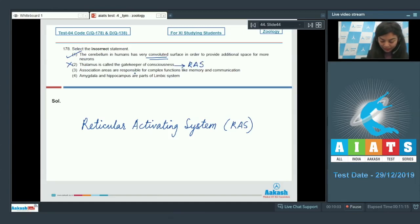Association areas are responsible for complex functions like memory and communication. This is correct. And amygdala and hippocampus are parts of limbic system. So this is also right. The correct answer is option number 2 because this is our incorrect statement.